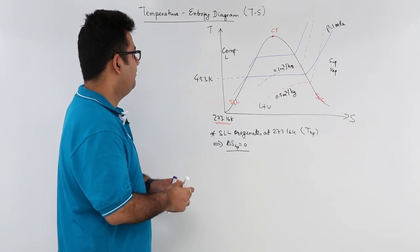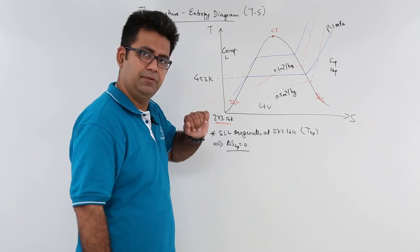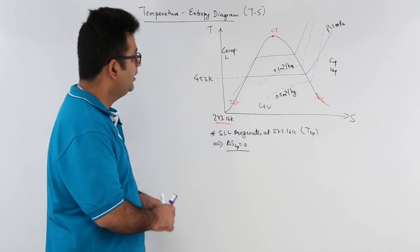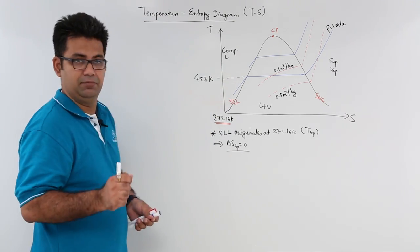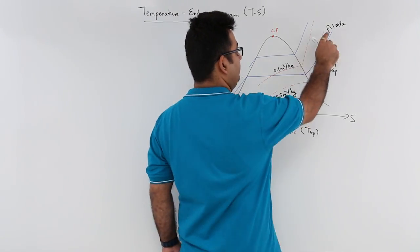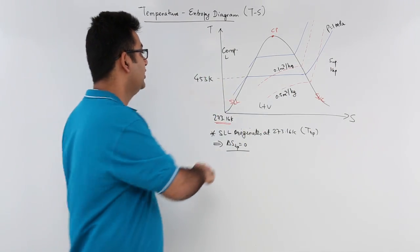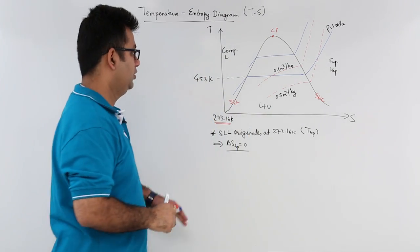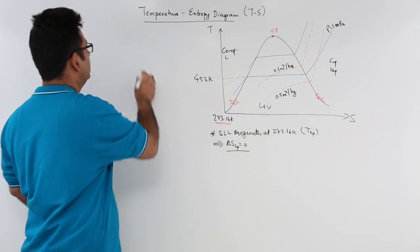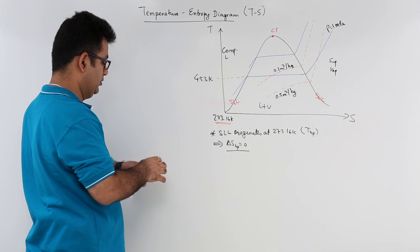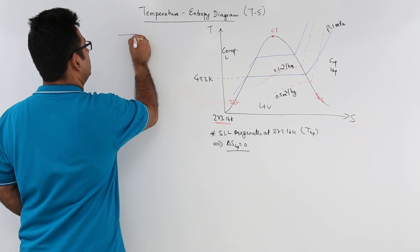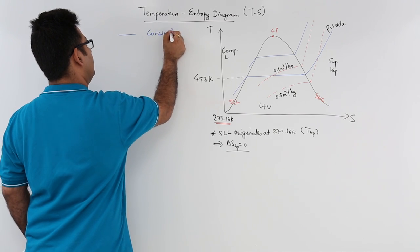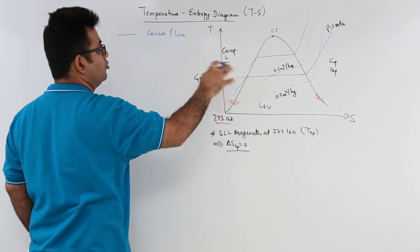Now in the compressed liquid region this blue colored line, this slant line, is the constant pressure line. This is 1 MPa pressure and this would be higher than 1 MPa. So this blue colored line is a constant pressure line, an isobar.